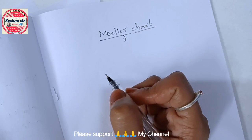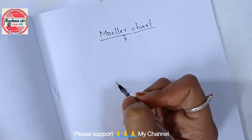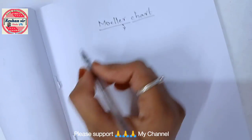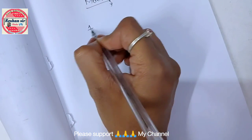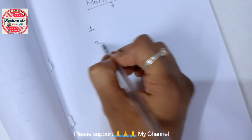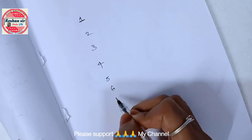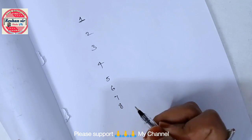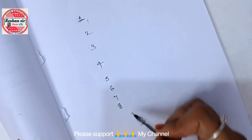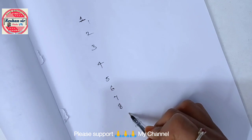First you have to write 1, 2, 3, 4, 5, 6, 7, and 8. So you have to write 1 to 8.